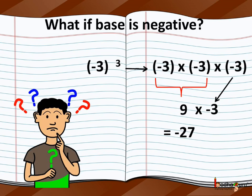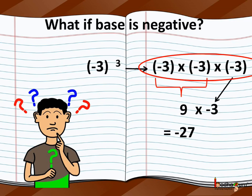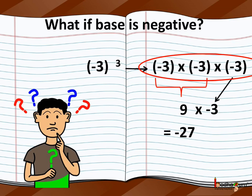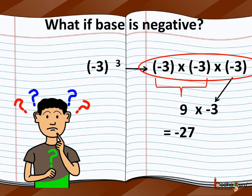Now, what if the base is negative? For example, minus 3 to the power 3. It means minus 3 multiplied by minus 3 multiplied by minus 3.